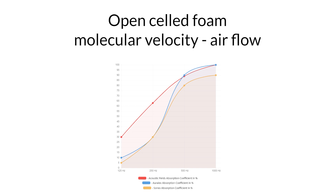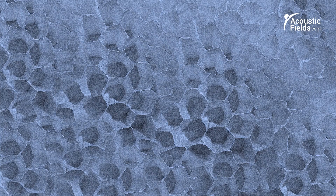The most economical, easy to produce, predictable, and consistent treatment for reflected energy is open-celled foam. We took eight years and millions of dollars to create the foam curves you see here. The technical term for this mechanism is molecular velocity — it works on airflow. As energy flows across the surface of the foam, friction is created, then heat, and it's an energy transformation and thus absorption. Remember, energy is not lost — it's just changed.